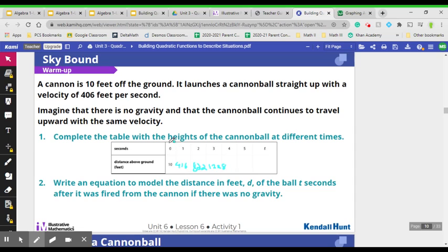1228 for 3, and so on. And what's happening here, as you might guess, is that our x values are going up by 1 each time. So we have plus 1. And then our y values are going up by 406 feet, which we know is the speed. Every single time it's going up by that same 406 feet.